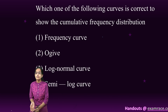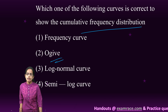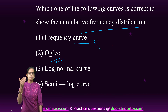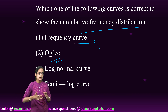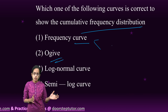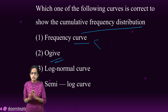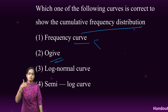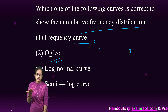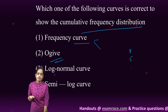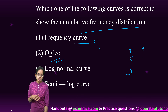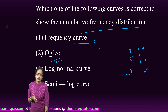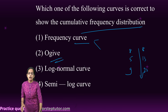Ogive is the name for the cumulative frequency distribution curve. The frequency distribution can be 'more than' (from highest to lowest) or 'less than' (from lowest to highest). In cumulative frequency, you keep adding frequencies — so if the values are 8, 5, 9, the cumulative frequencies become 8, 13, 22, and so on. This is explained through an ogive curve.